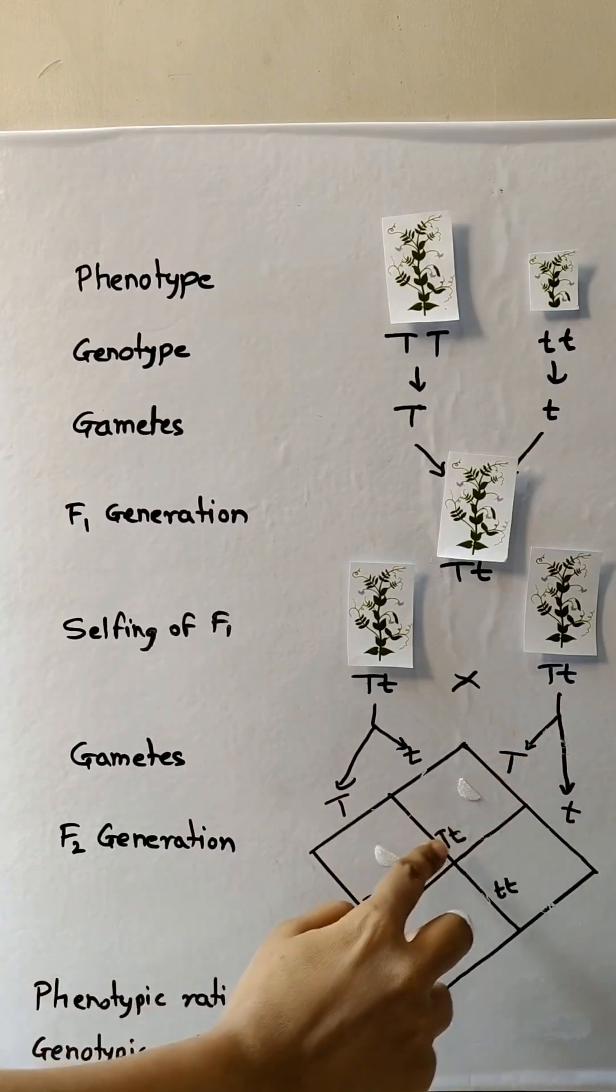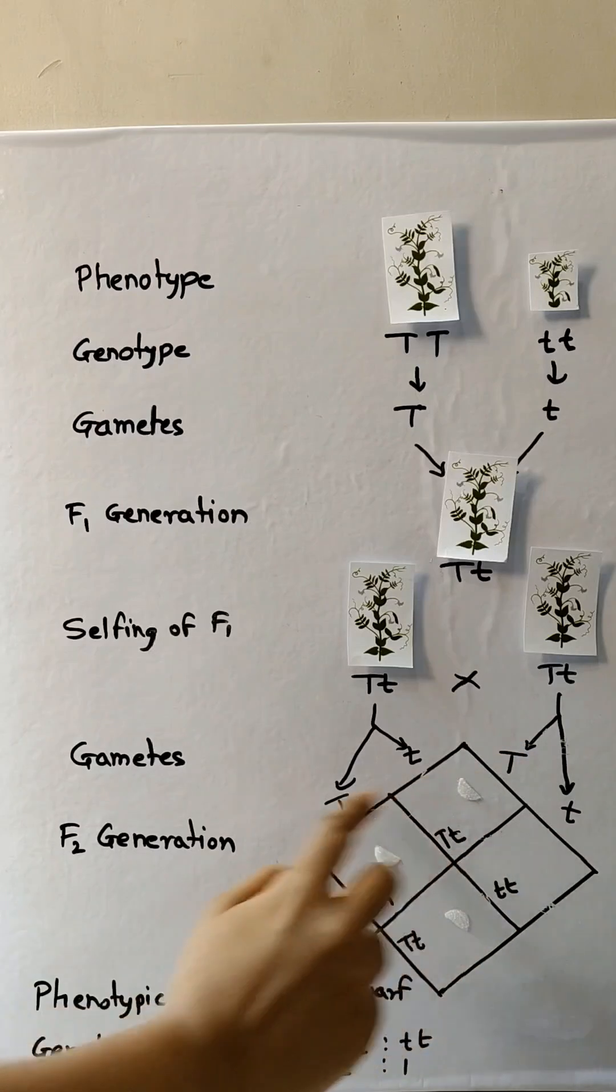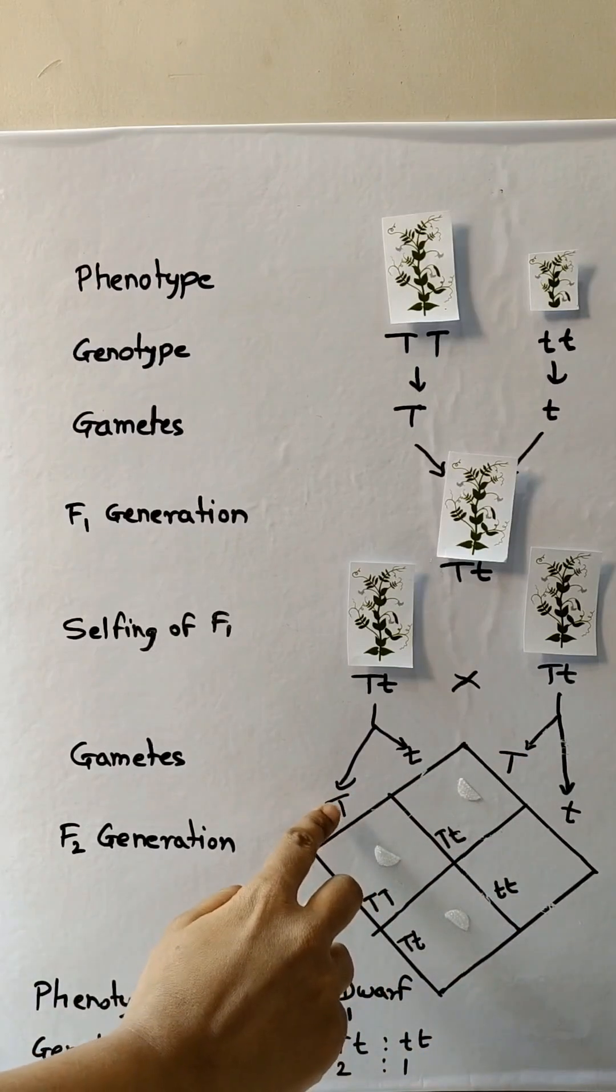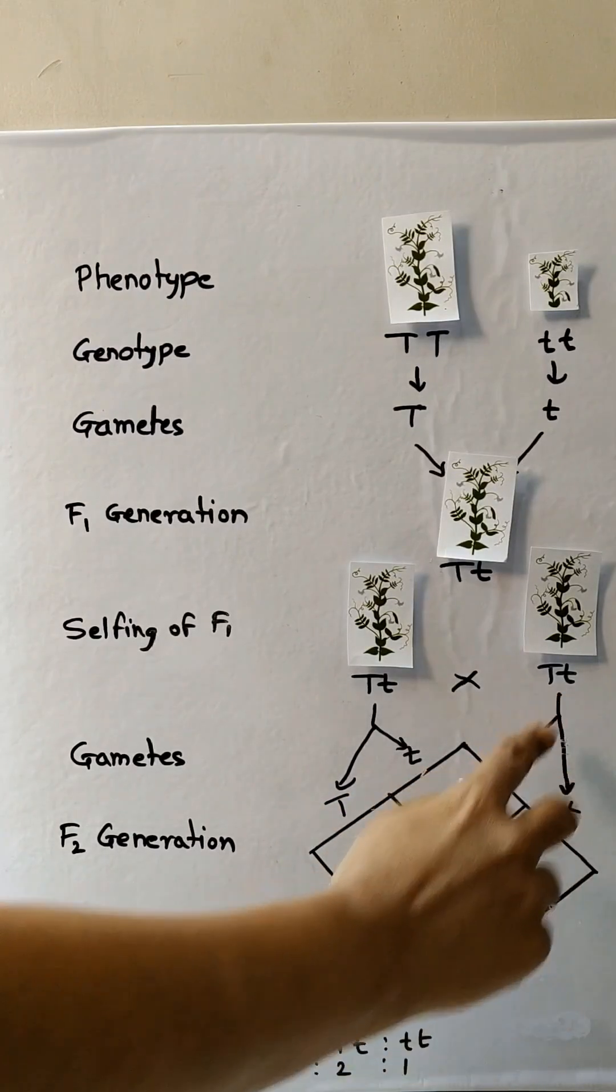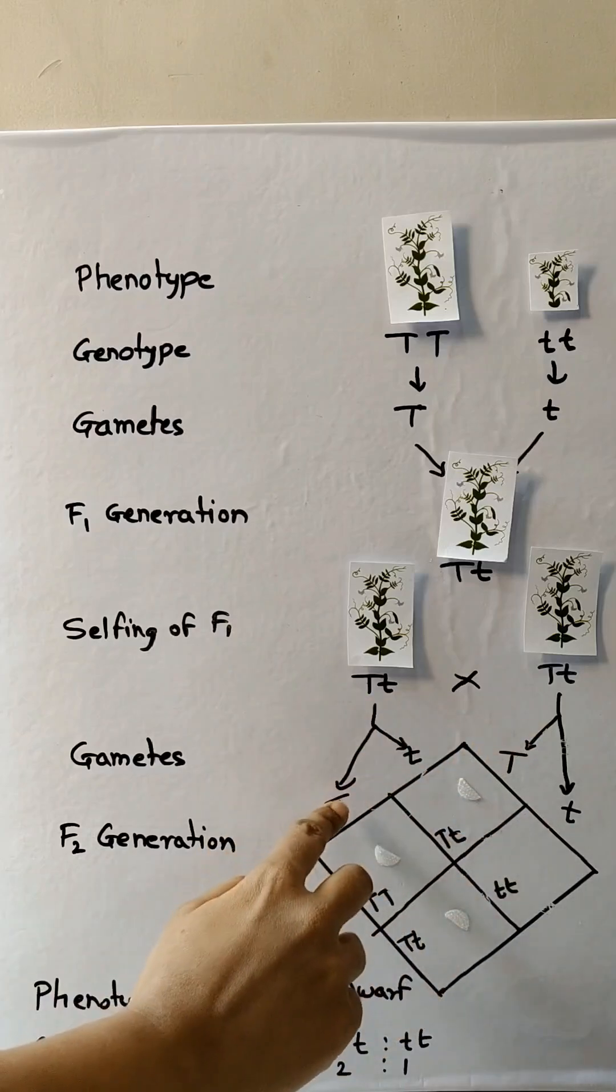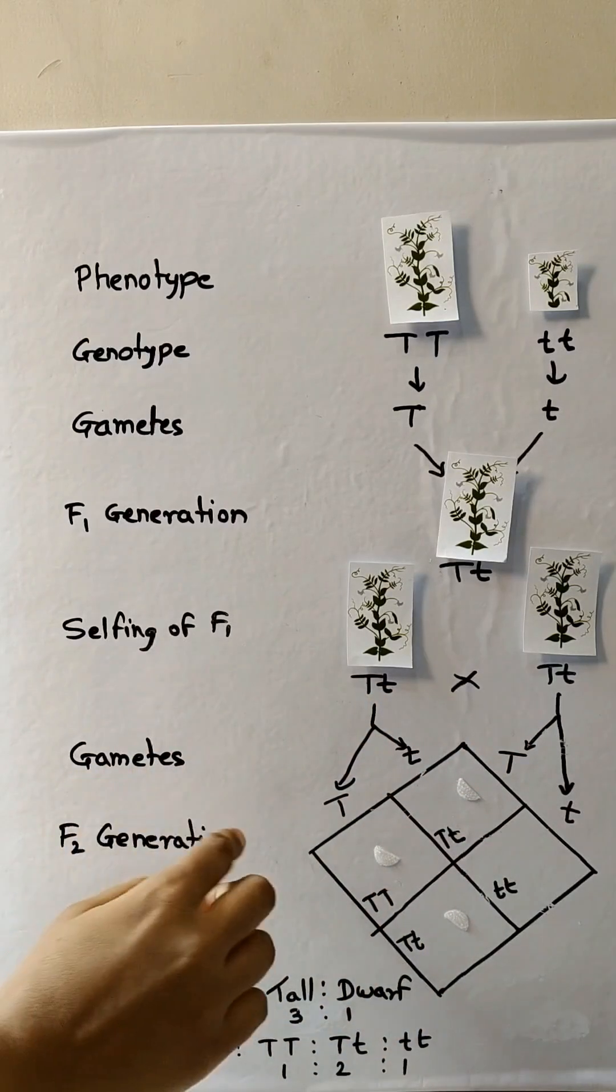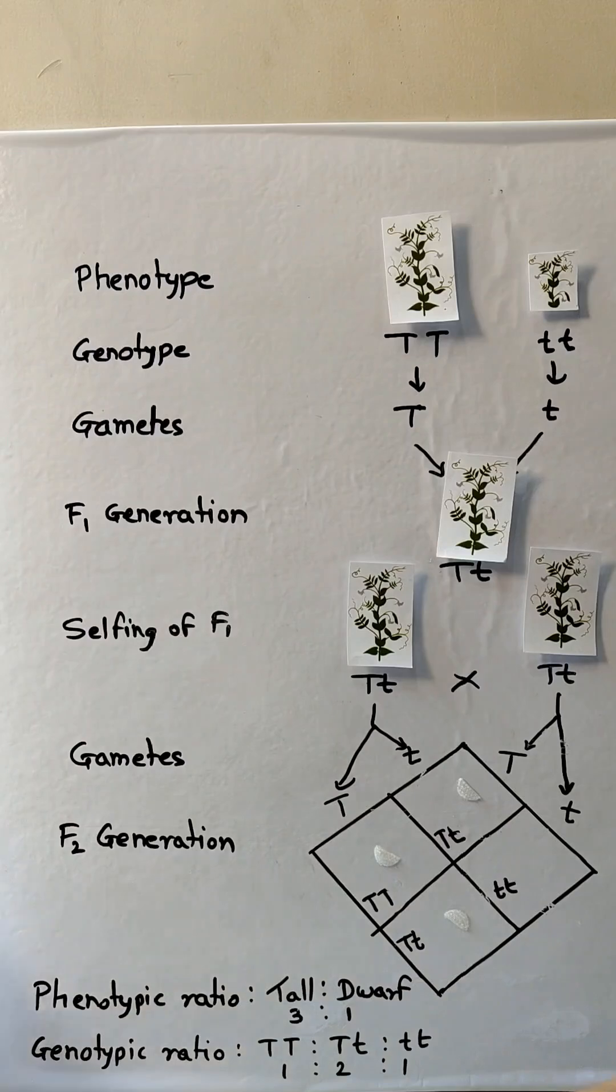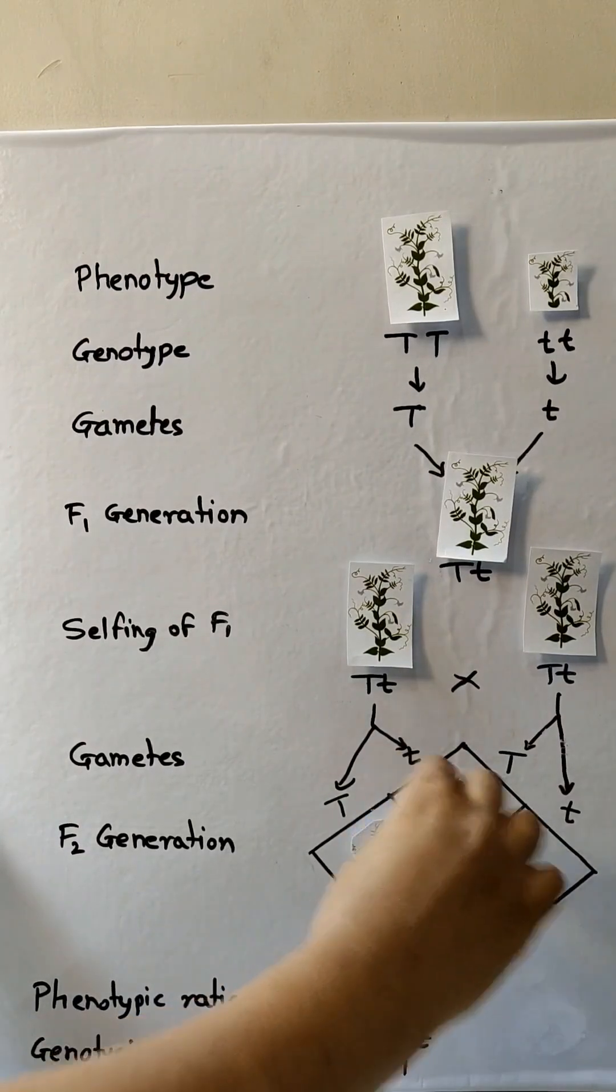And here you can see capital T small t, capital T capital T. So now capital T small t small t is dwarf, and capital T capital T is a tall plant, and capital T small t is again tall plant.